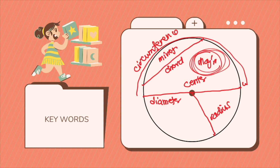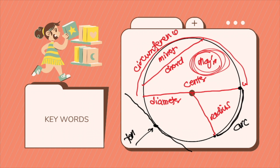Then we have your arc, which goes from one point of your circumference to another point — it is just a part of the circumference of your circle. Then we have our tangent line. Our tangent line is a line which touches our circumference at one point, from the word 'tangere' from Italian, which means to touch.